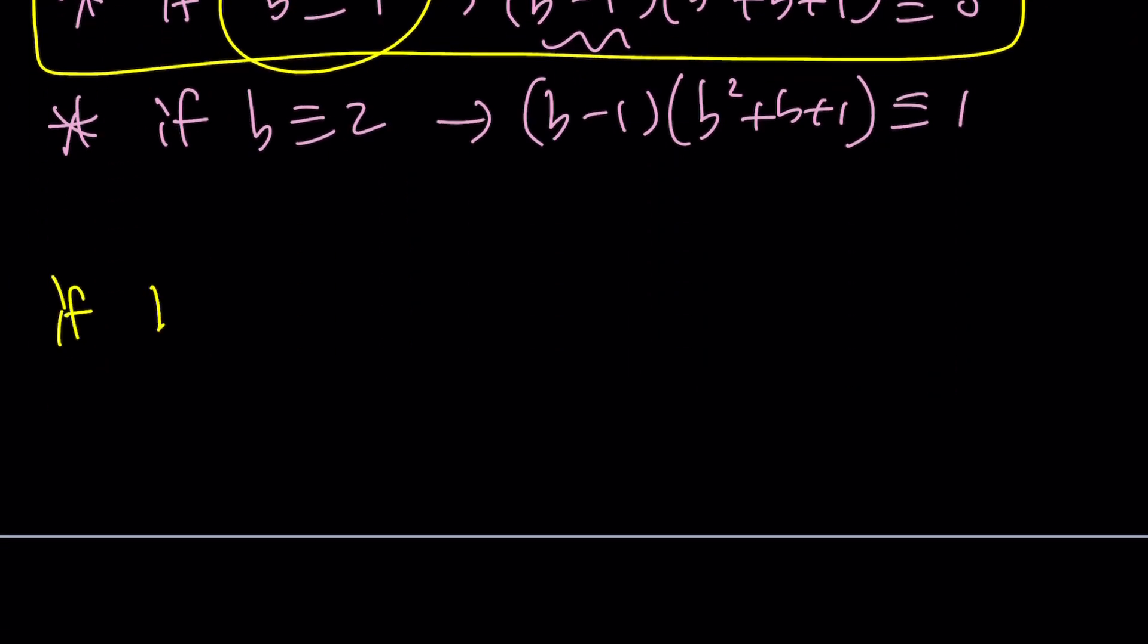So if b can be written as 3k + 1, then b - 1 can be written as 3k, and (b - 1)(b² + b + 1) is going to be 3k times—now I'm going to replace b with 3k + 1.